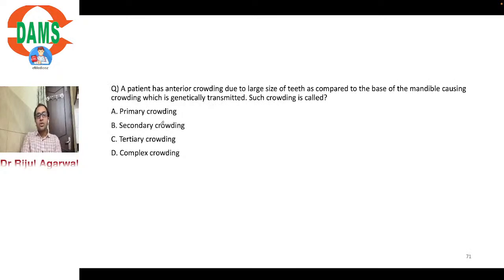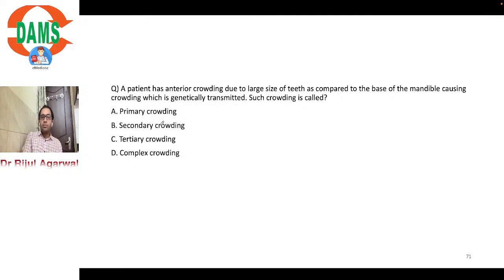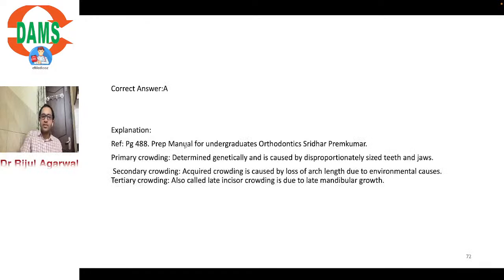A patient has a discrepancy due to large teeth relative to the size of the mandibular base, causing crowding that is genetically transmitted — this is called primary crowding. The key identifier is the word 'genetic.' Secondary and tertiary crowding have different etiologies.